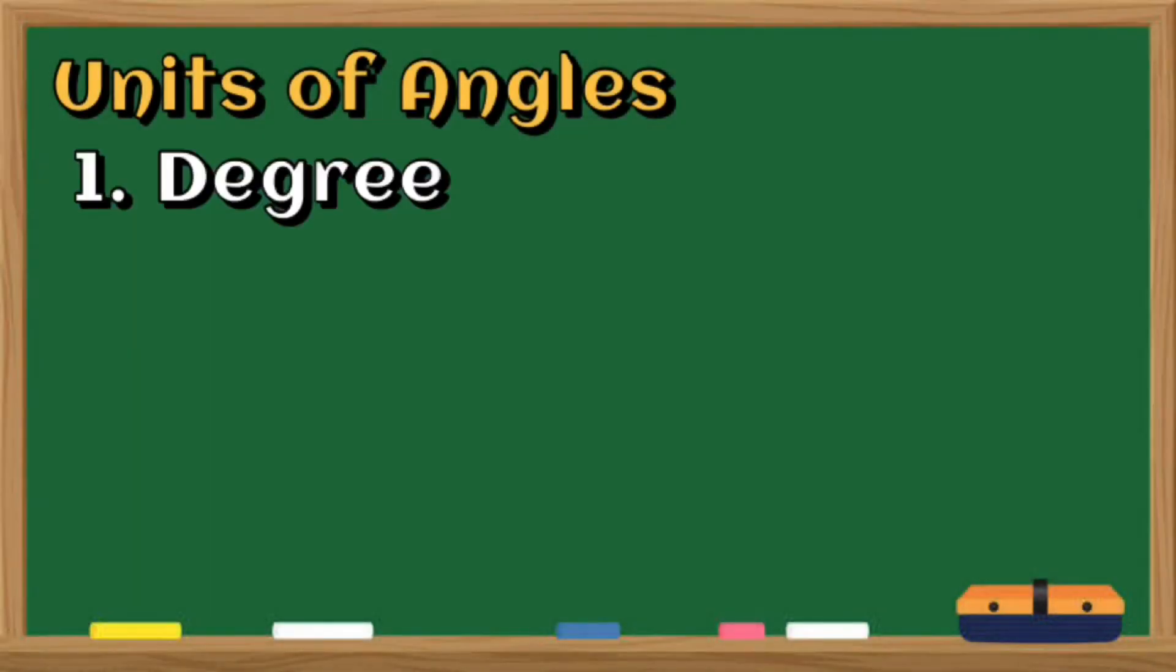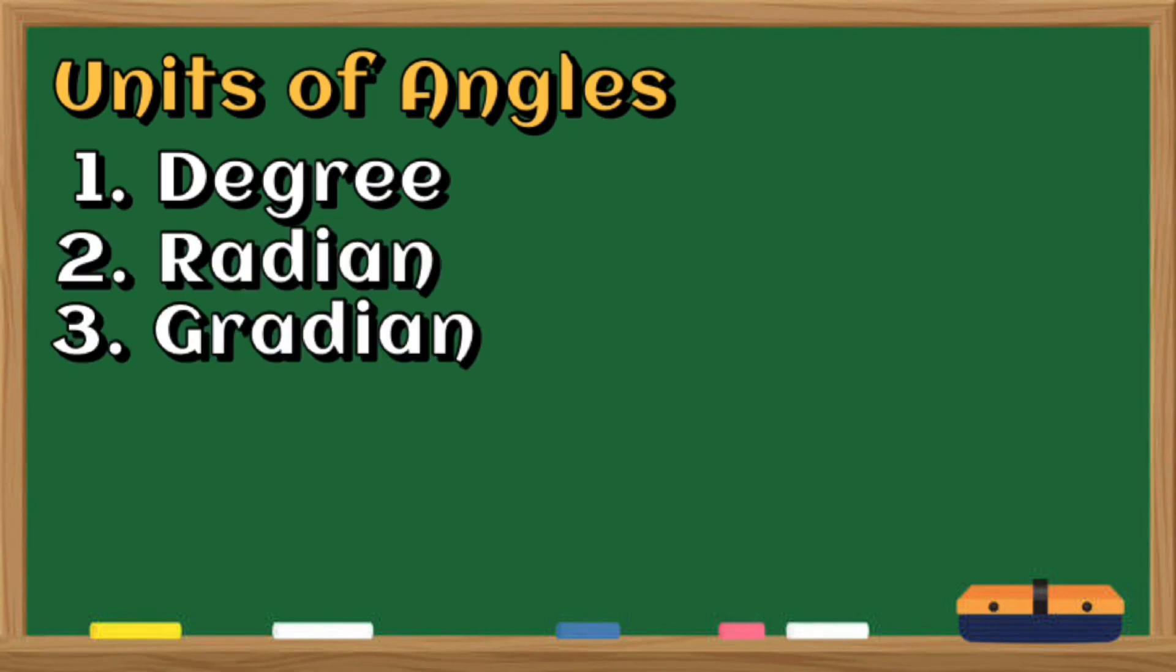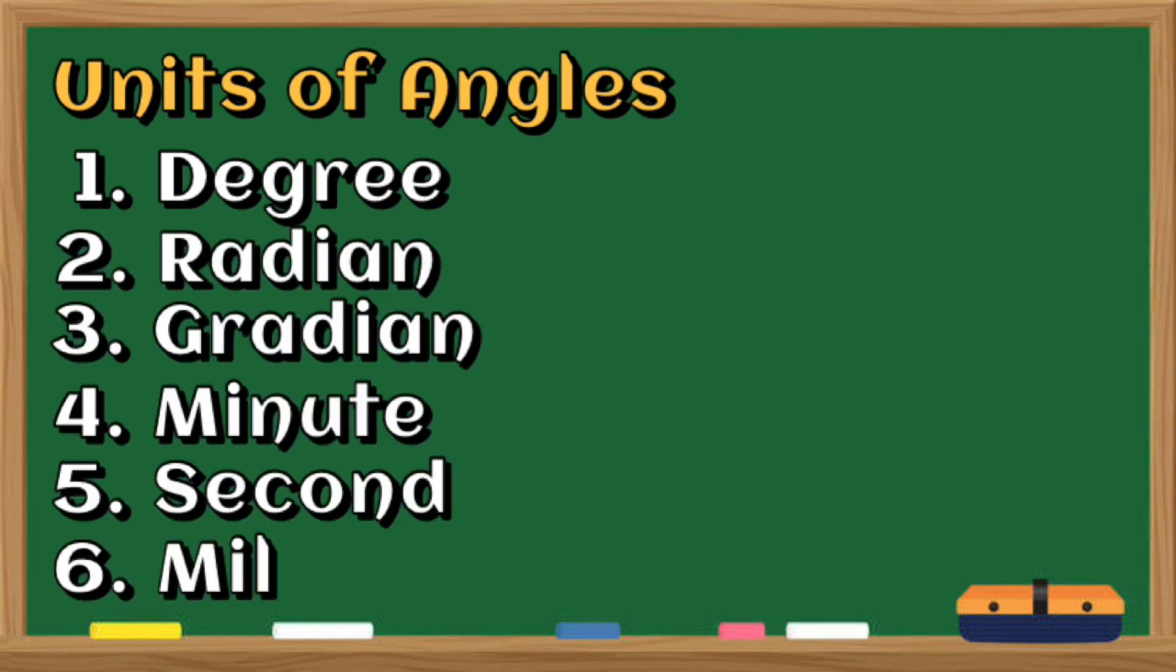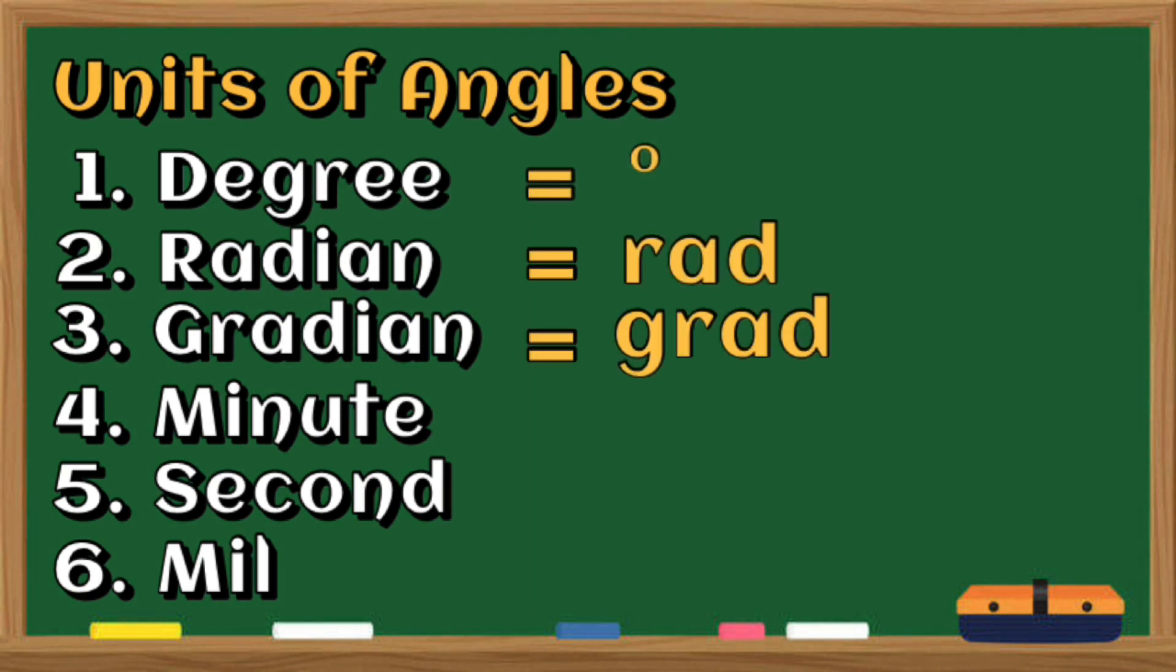Angles are expressed in different units depending on the use. Listed are the different units used in expressing measures of angle. We have the degree, radian, gradient, minute, second, and mil, and we have here their symbols.